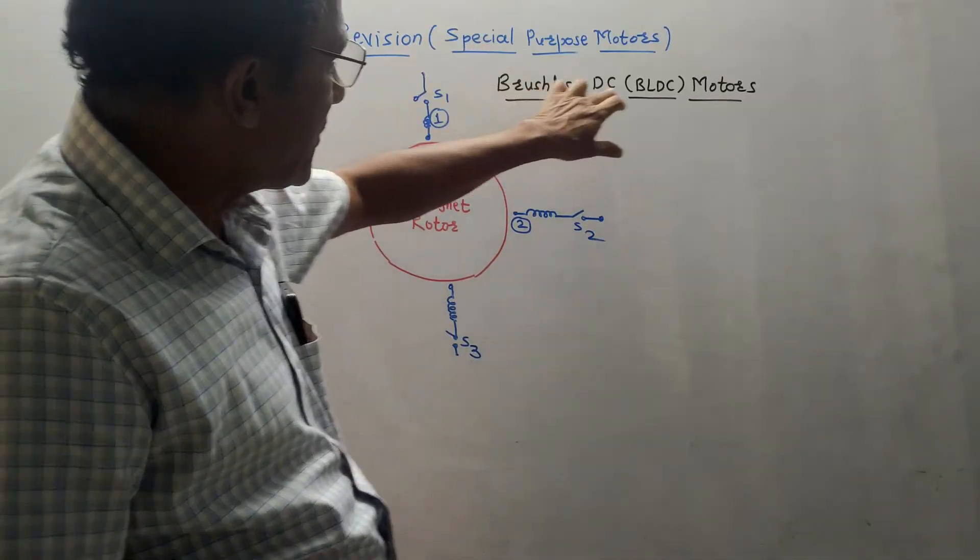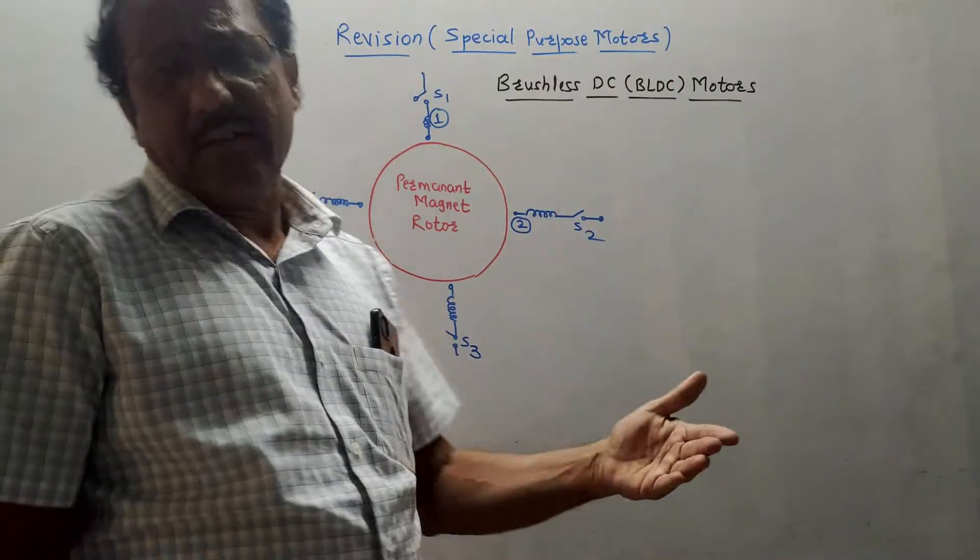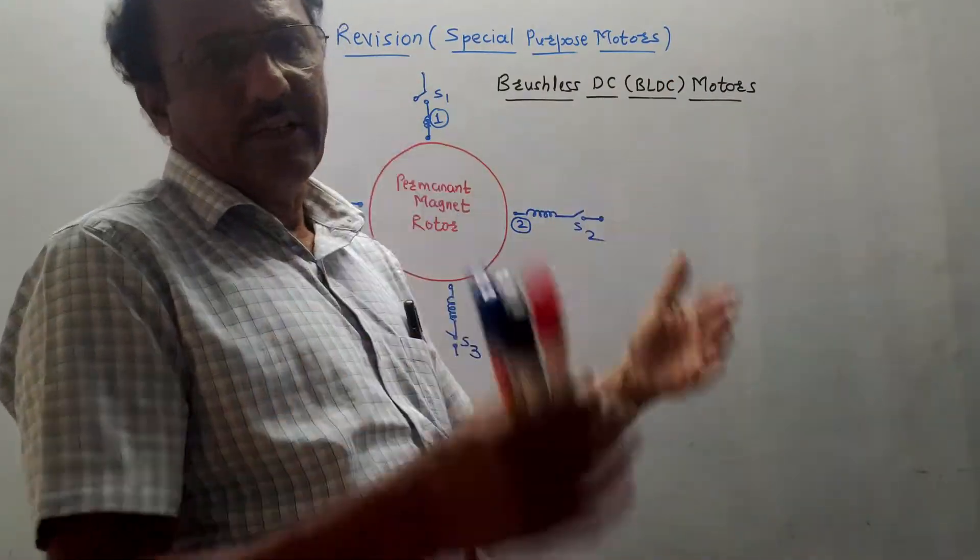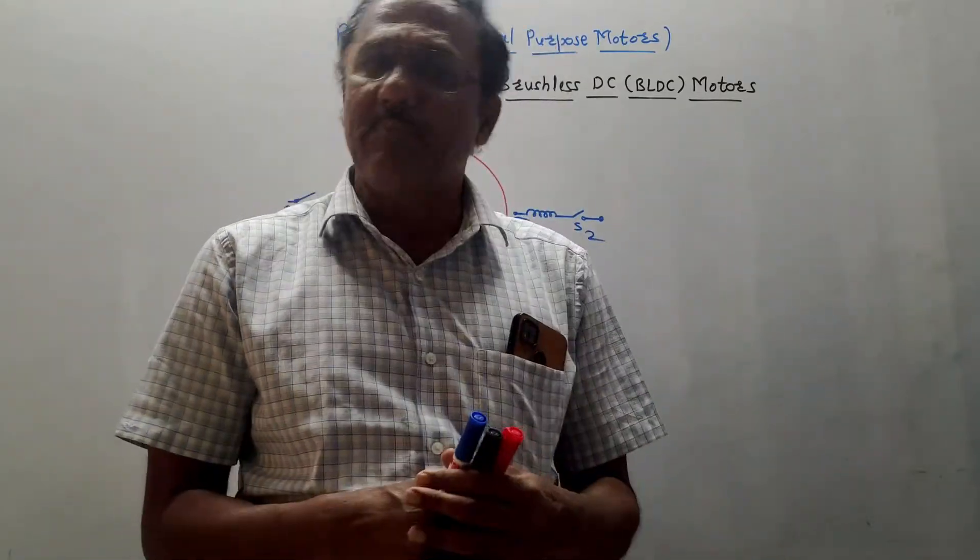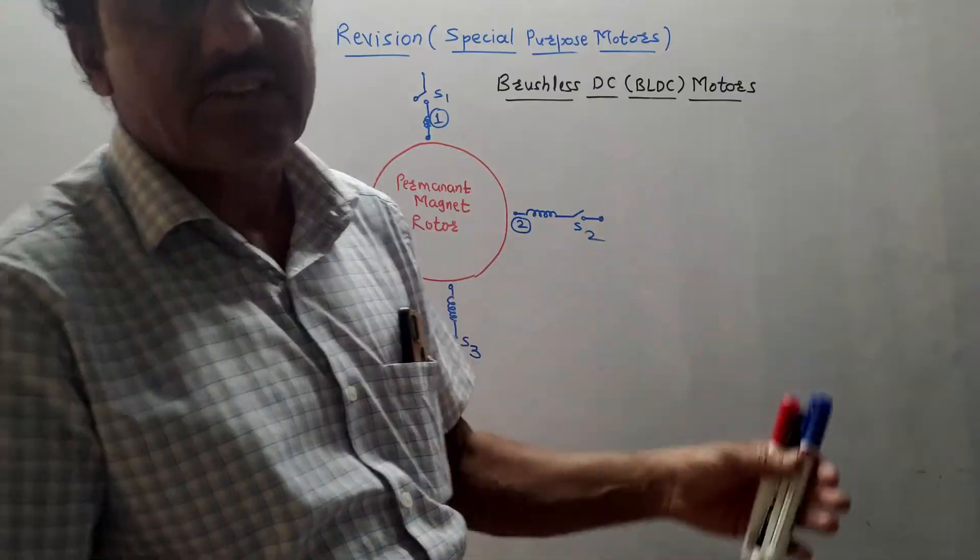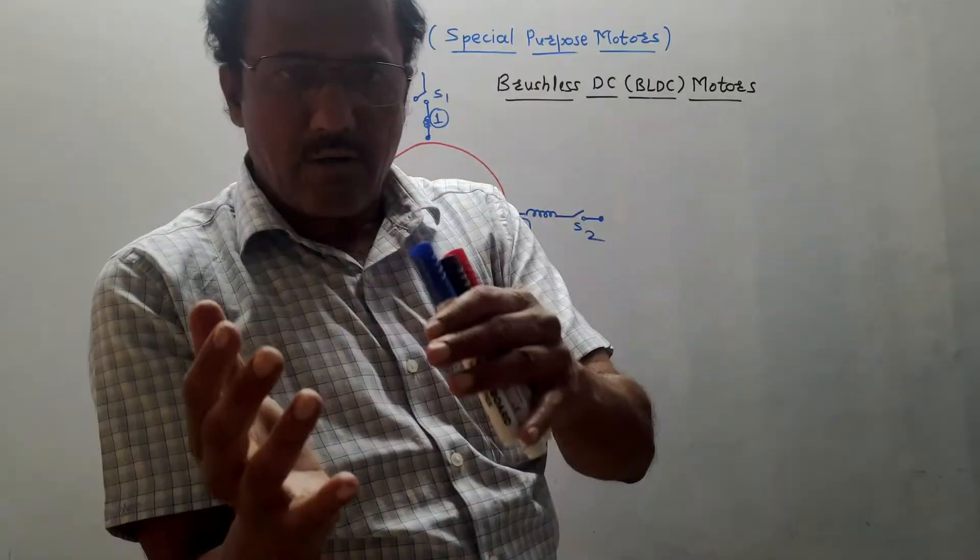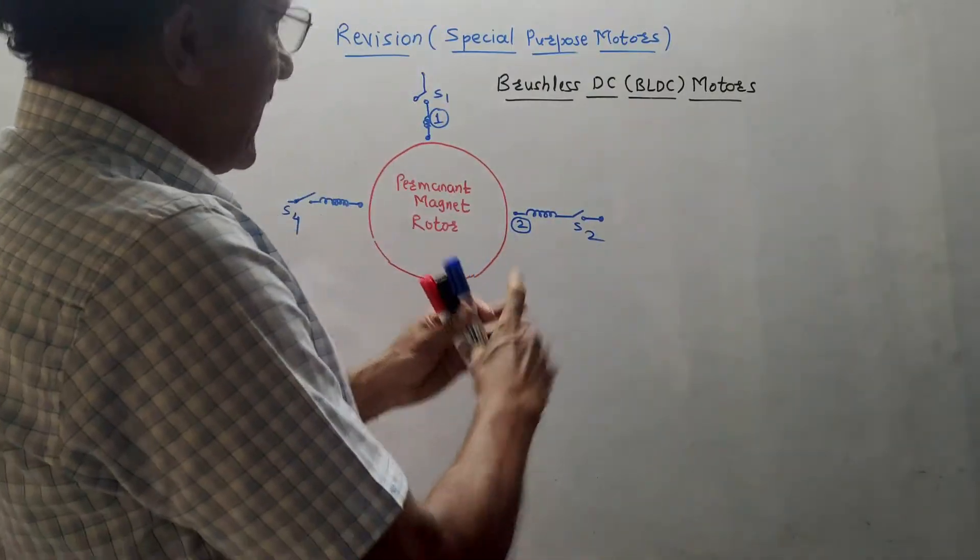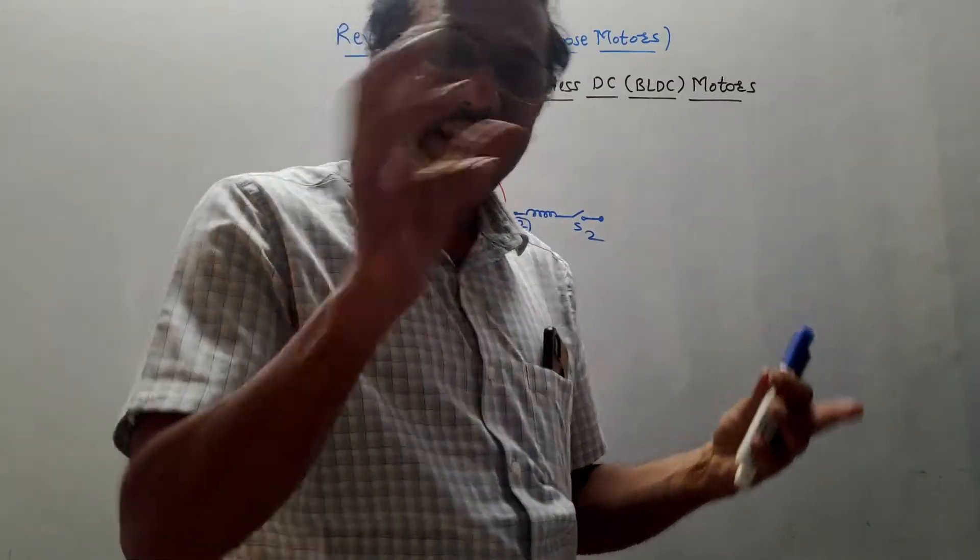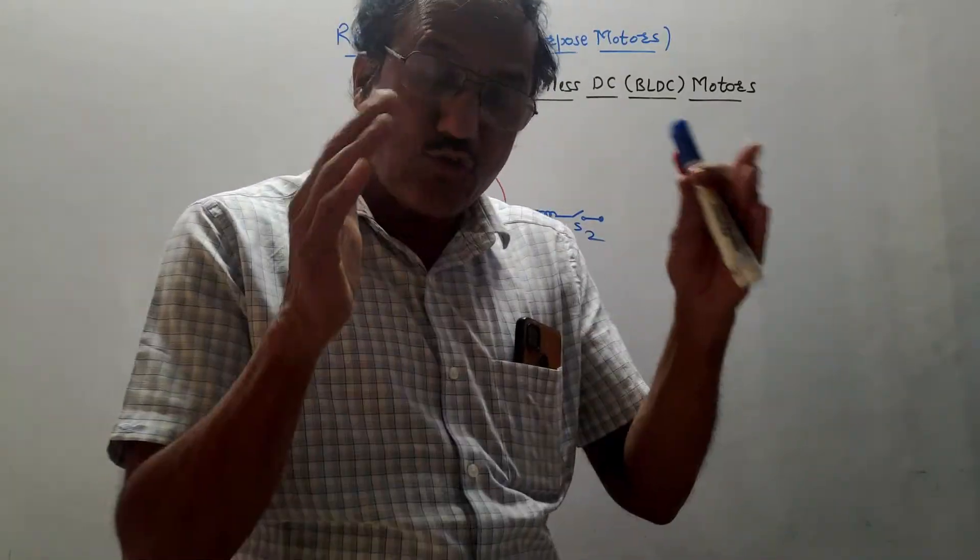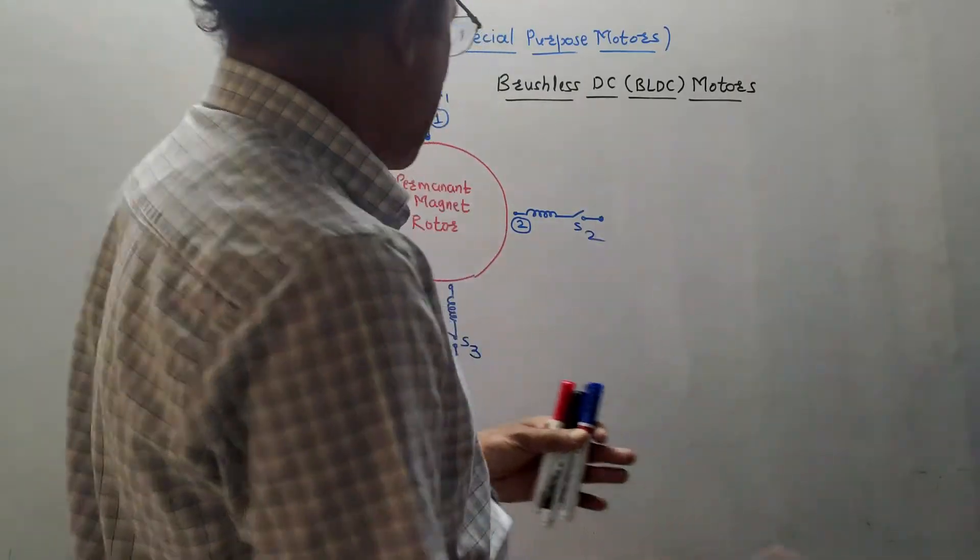First part is brushless DC, that is BLDC motors. In the earlier case, like in case of DC motors or induction motors, we discussed that mechanical components are required. For example, brushes are required, then commutators are required. These things are required to transfer energy to the corresponding motor. In this case, everything, I mean brushes and commutators are not at all used, rather electronic system is used, electronic switching system is used, which is designed by using transistors or thyristors.